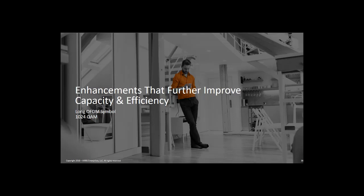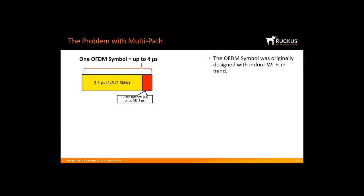In this section, we'll look at two other 11AX enhancements that improve capacity and efficiency: long OFDM symbol and 1024 QAM. The OFDM symbol was originally designed with indoor Wi-Fi in mind. In an indoor environment, multipath reflected RF signals were expected to come back very quickly. The pre-11AX OFDM symbol was composed of a data portion that is 3.2 microseconds long with a guard interval of 0.4 or 0.8 microseconds.